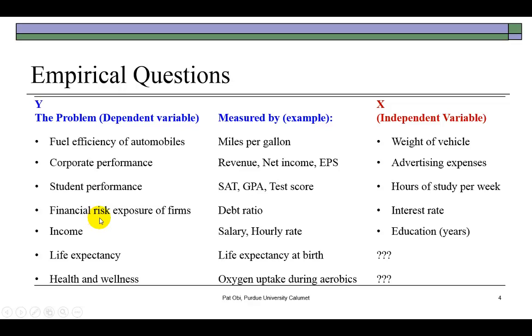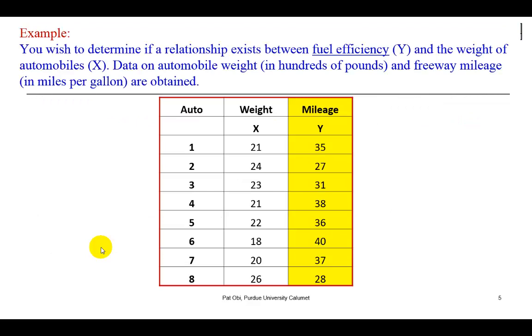Financial risk measure could be the firm's debt ratio. The higher your debt ratio, the more you're leveraged. Income could be salary, monthly salaries, or hourly wage rate. So I just threw these out to give you a sense of the fact that after you've identified the problem you wish to attack, you want to be sure that you can measure it in some way before you continue.